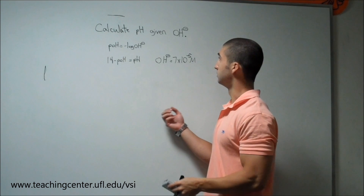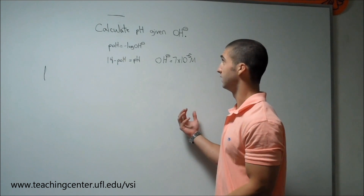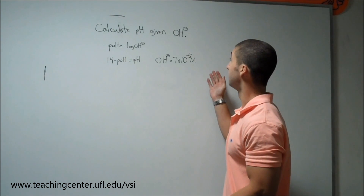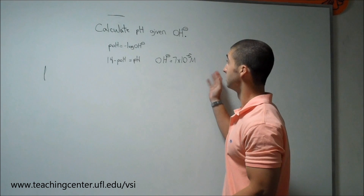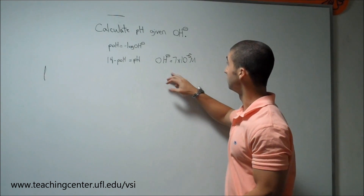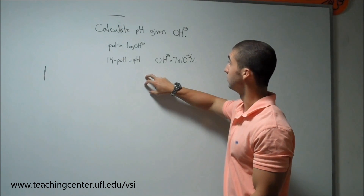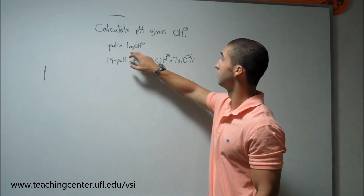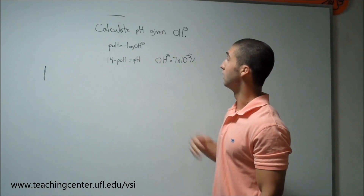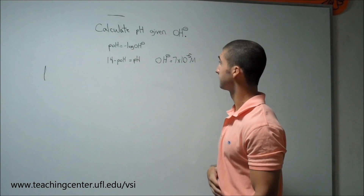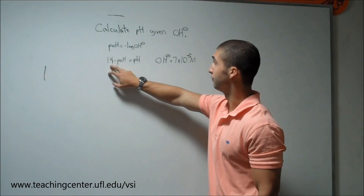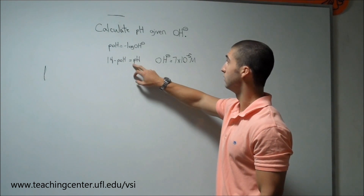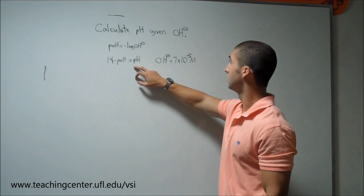This problem wants you to calculate the pH given the hydroxide concentration instead of the proton concentration. All you have to do is use this formula: the pOH equals the negative log of the hydroxide concentration, and then use 14 minus whatever the pOH is to get the pH of that solution.